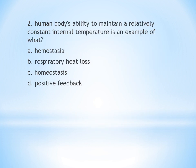Question number 2: Human body's ability to maintain a relatively constant internal temperature is an example of what? A. Hemostasis. B. Respiratory heat loss. C. Homeostasis. D. Positive feedback. The answer is C — homeostasis.